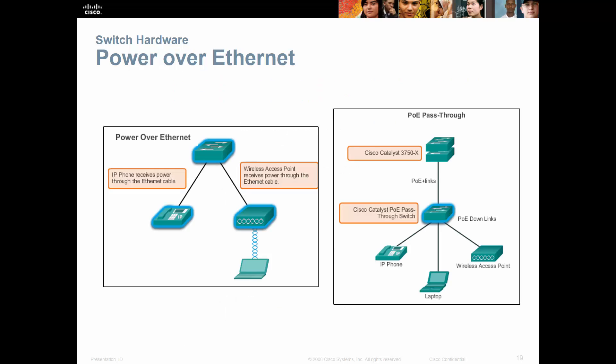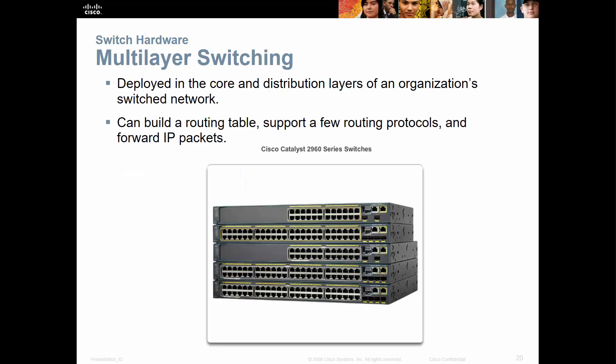We have Power over Ethernet (PoE), where the switch provides power over the Ethernet connection — things like powering a phone or an access point through a switch. We also have PoE pass-through, meaning power on certain ports passes through to a different link. We also have multi-layer switches — Layer 2 and Layer 3 switches — which can operate by MAC address or IP address.